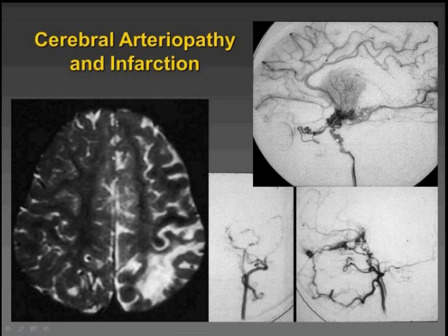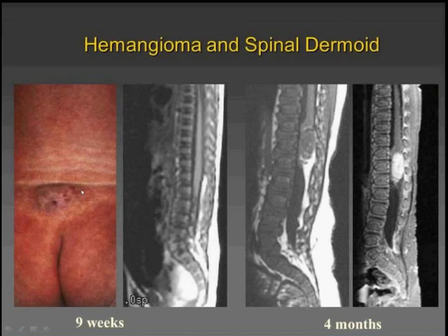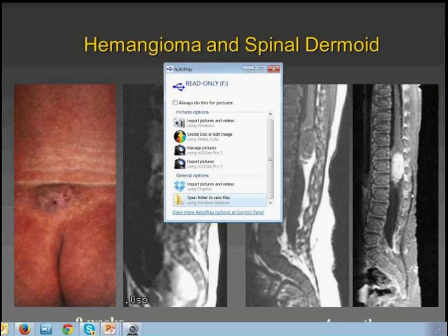Here's an example of a lumbar region infantile hemangioma with underlying developmental abnormality. There's tethering of the spinal cord — the conus is low, there's fat, and this is actually a dermoid in the subarachnoid space. Then in the same patient a few months later, the patient developed a hemangioma on the conus. That part's not typical, but the hemangioma can extend into the spine.